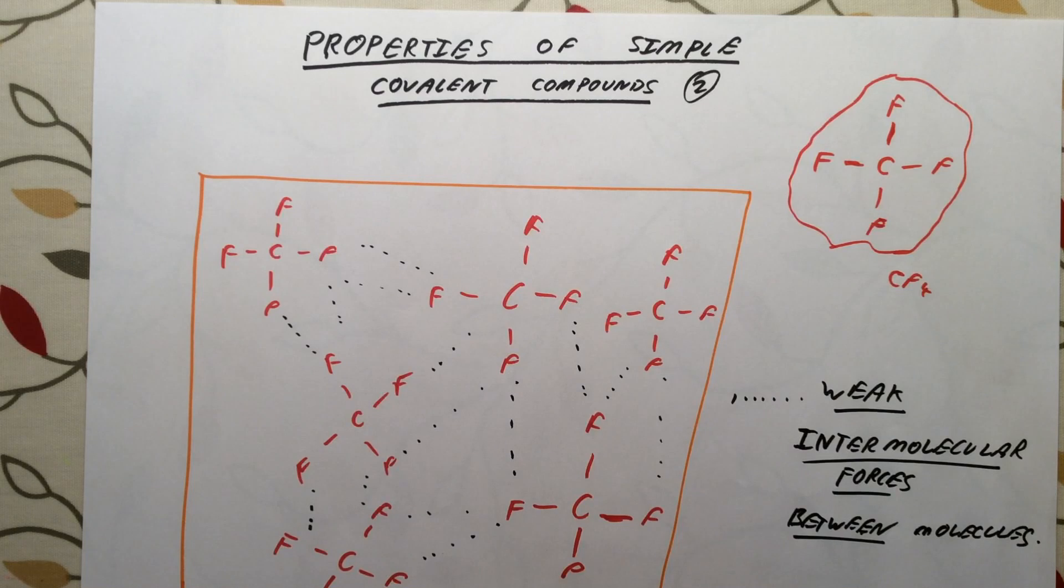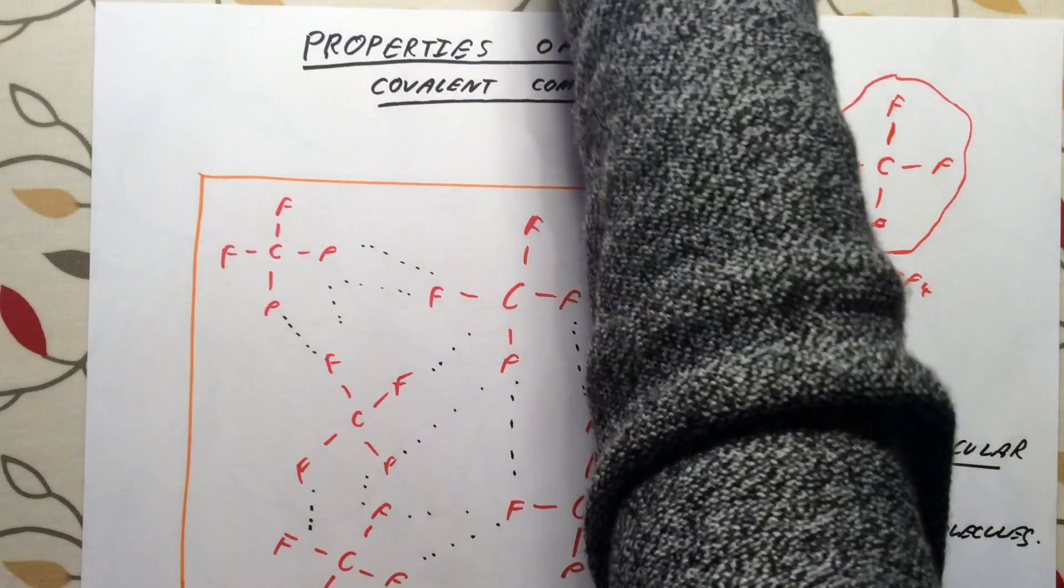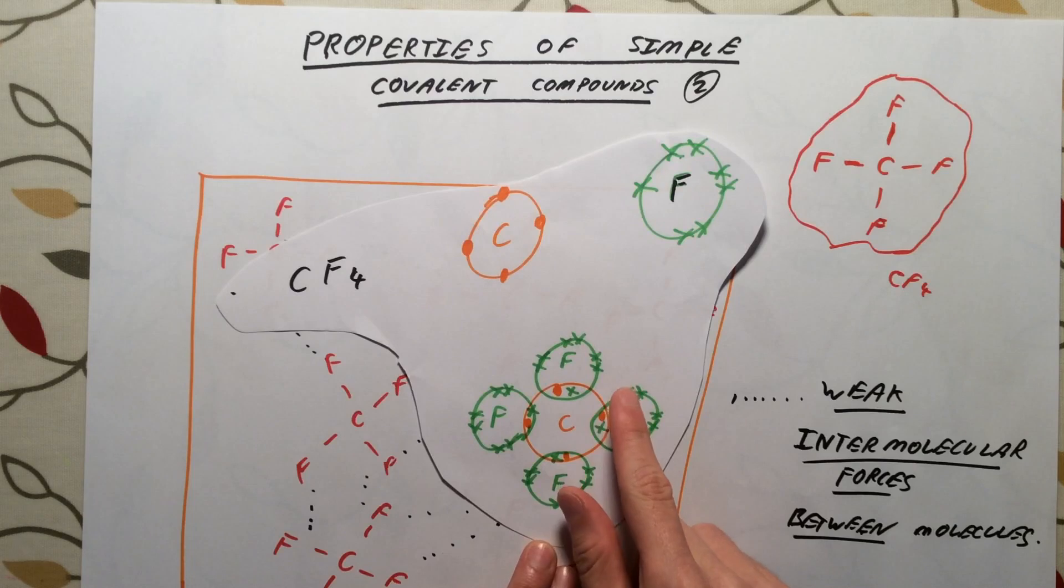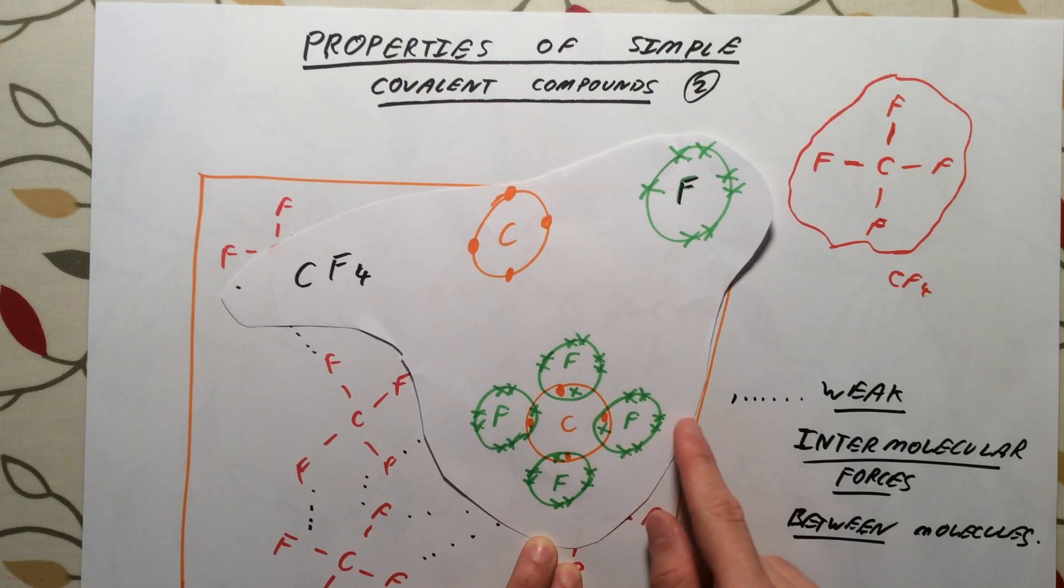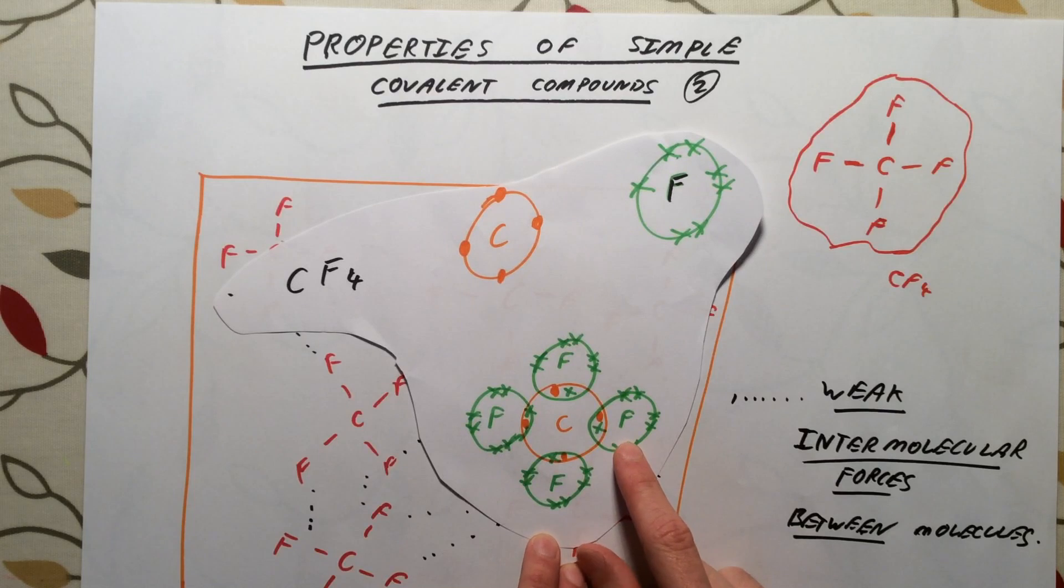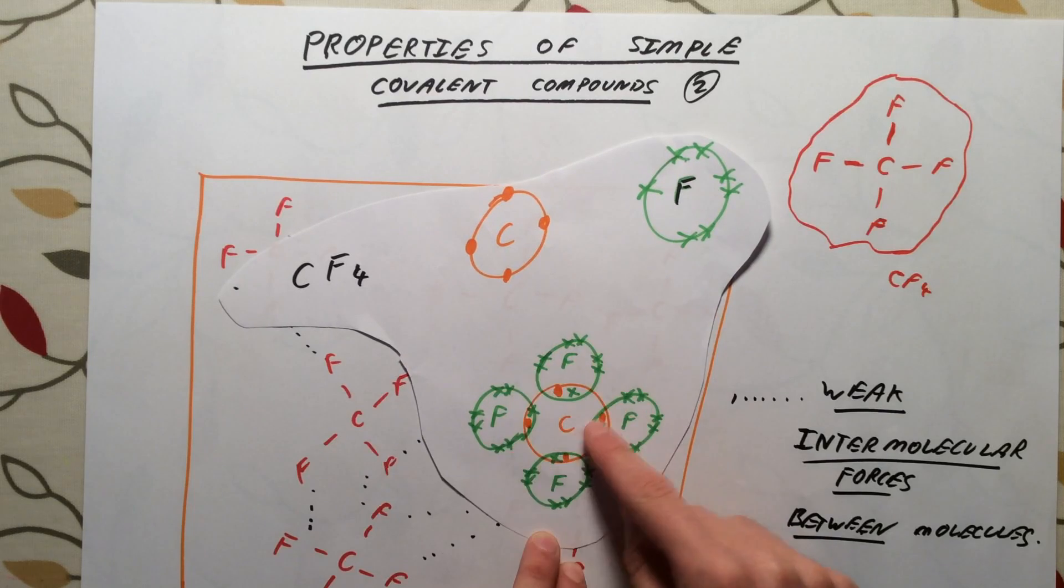In addition, simple covalent compounds do not conduct electricity. If we look back to our dot and cross diagram, we do not have any electrons transferring, they are just shared. So none of the species here have any charge. They're not positive or negative. They are all neutral atoms still. Therefore, we do not have any charges.